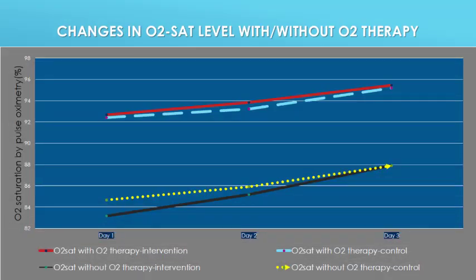This figure shows the change in O2 saturation level with and without O2 therapy between the groups. You can track the O2 saturation with O2 therapy in the intervention group with the red line and the blue line for the control group. The black line tracks SpO2 without O2 therapy in the intervention group and the yellow line for the control group. The SpO2 level with and without O2 therapy after three days was better in the intervention group compared to the control group, but the differences were not statistically significant.